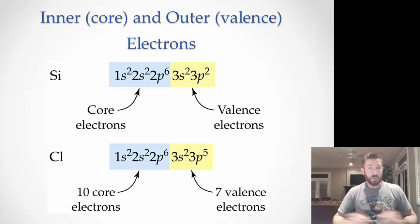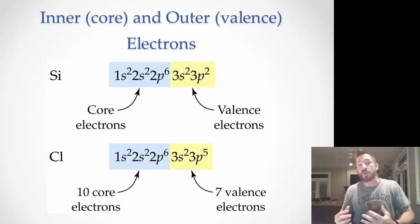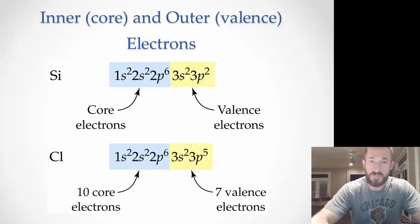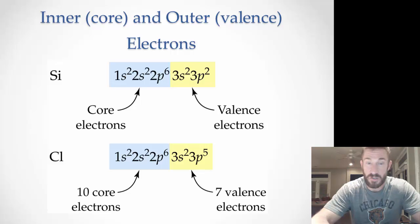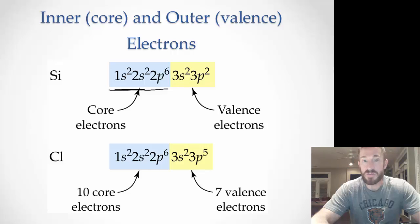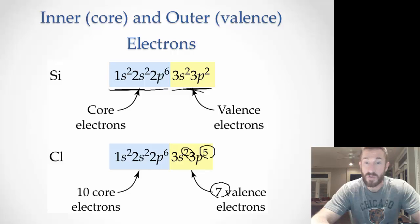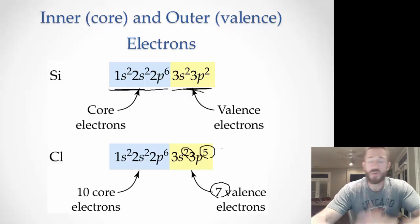A couple of important things when you do electron configuration: we put electrons into two categories — inner or core electrons, and outer or valence electrons. The ones involved in reactions that are lost, gained, or shared are the valence electrons; core electrons are very stable. For silicon: 1s² 2s² 2p⁶ 3s² 3p² — the inner electrons are core, and the outer electrons are valence. For chlorine, it has seven valence electrons from 3s² 3p⁵, and ten core electrons.